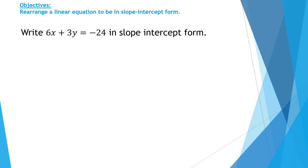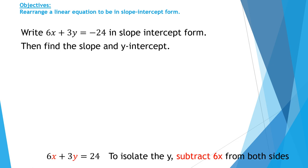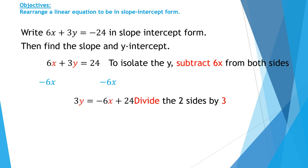Write 6x plus 3y equals negative 24 in slope intercept form. What if the equation is not given in slope intercept form and I want to find the slope and the y-intercept? I have to rearrange it to make y the subject of the equation, and then I can pick out the slope and the y-intercept. First, I have to isolate the y by removing the 6x — so I do the inverse operation and subtract 6x from both sides. It becomes 3y equals negative 6x plus 24.